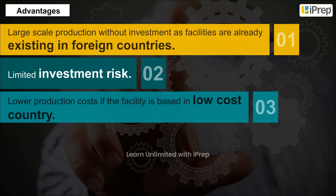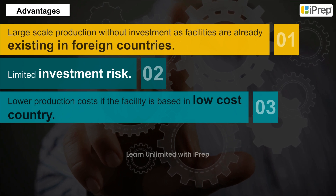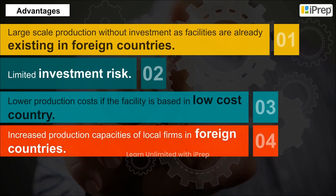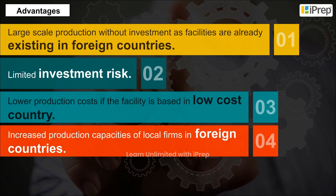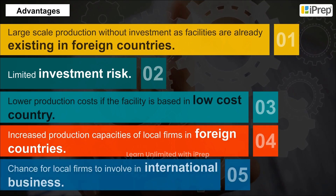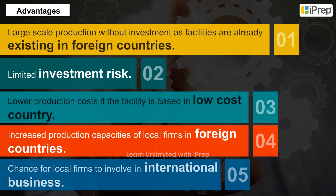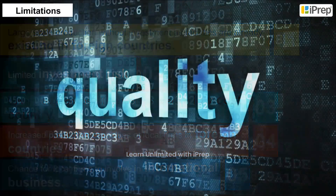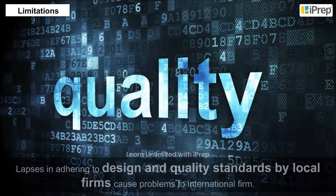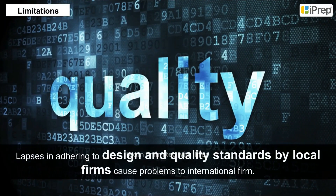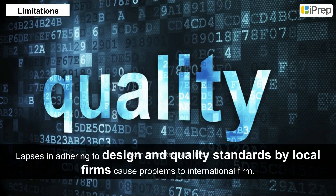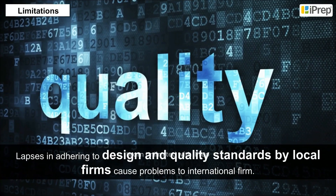Advantages of contract manufacturing: large-scale production without investment, as facilities are already existing in foreign countries; limited investment risk; lower production costs if the facility is based in a low-cost country; and increased production capacities of local firms in foreign countries, giving local firms a chance to participate in international business.